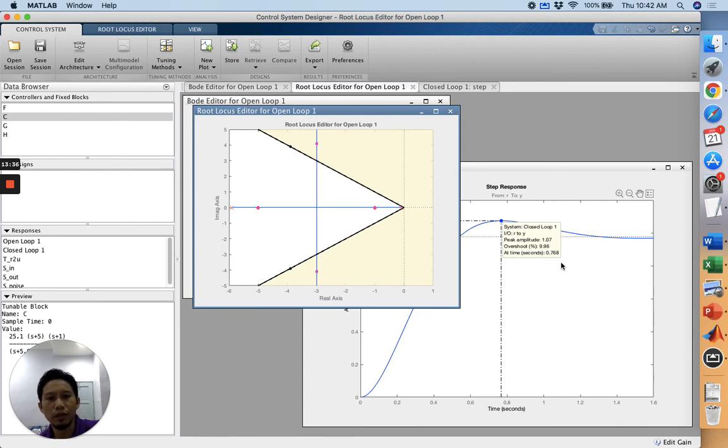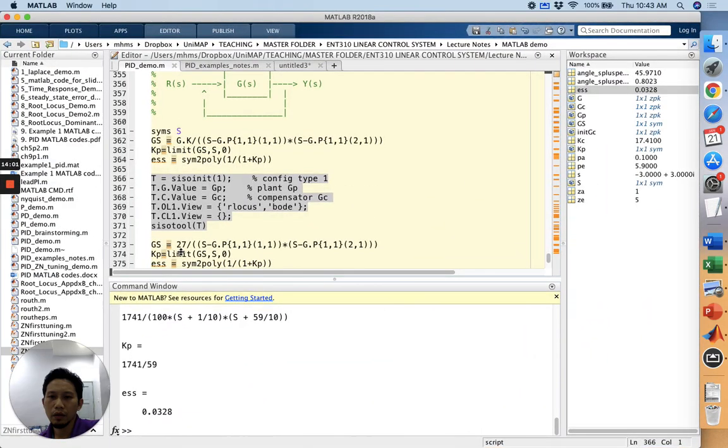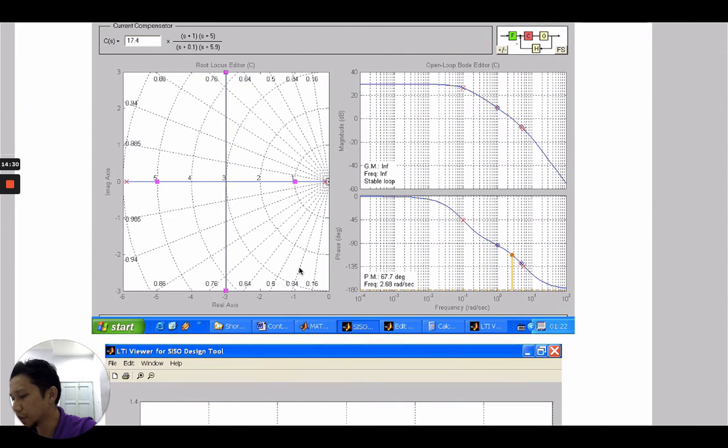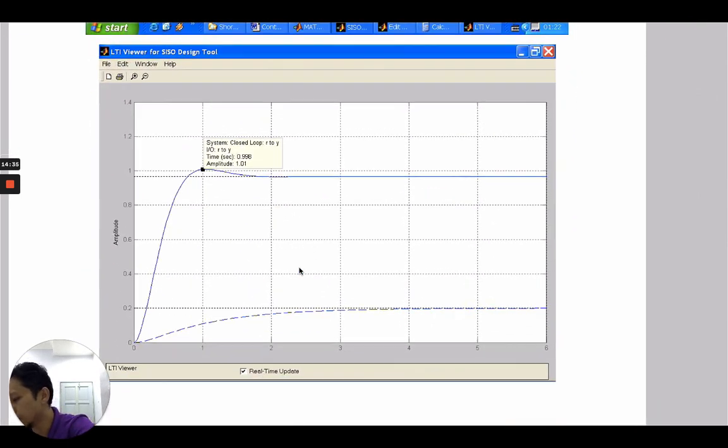We have achieved the two design requirements: the percent overshoot and TP. How about the steady-state error? We wish to have less than 5%. We have KC as 25.1, so we can try to find the steady-state error after we set the new KC. We get about 2.3%, which is less than 5%. We have successfully satisfied all the design requirements.